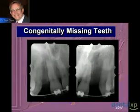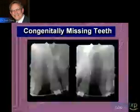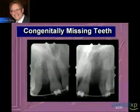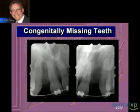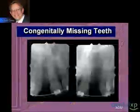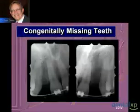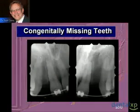As you can see by the periapical X-rays here, the right side has very, very limited room. The apexes of these roots are basically coming together.